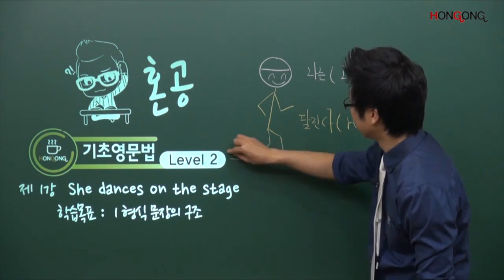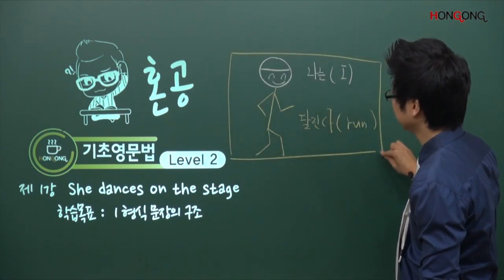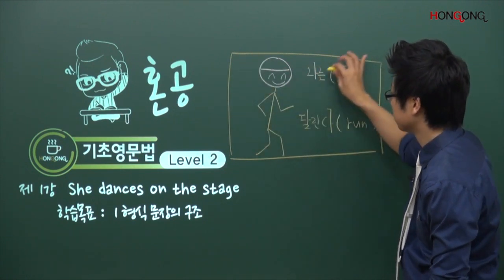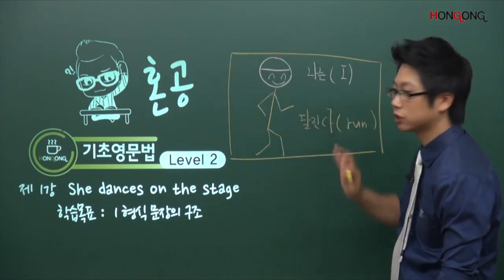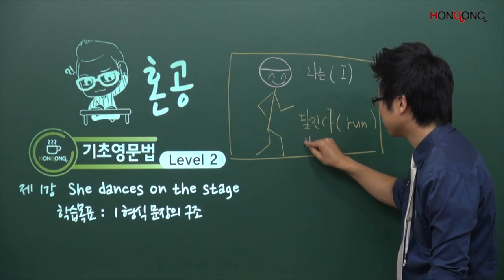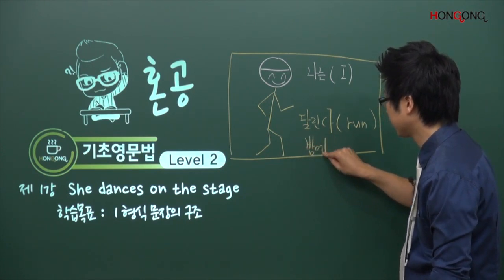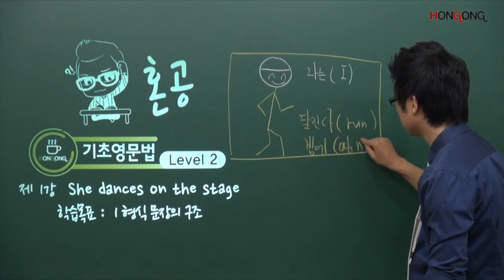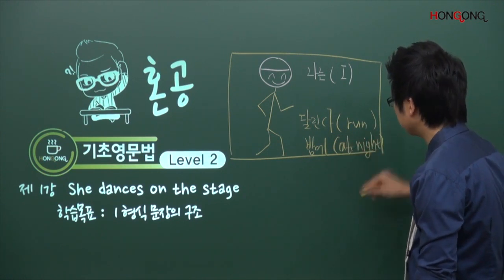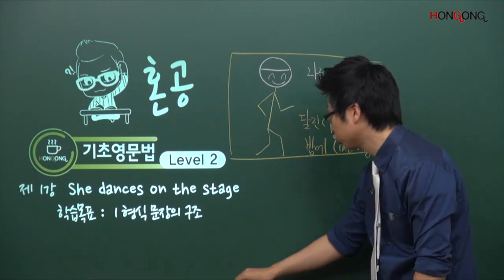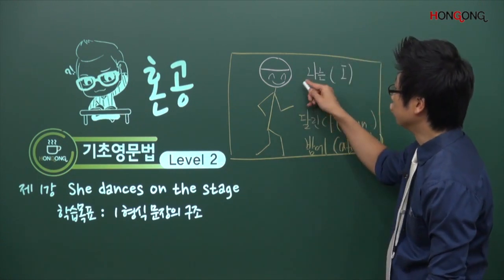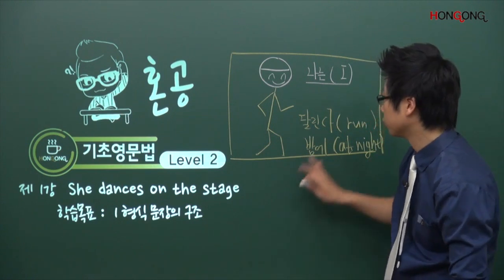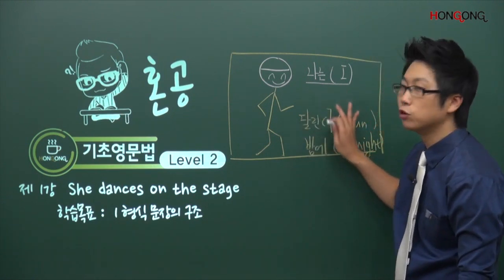그 다음에 맨 끝에 배경이 나오겠죠. 배경이 쭉 이렇게 등장합니다. 밤에 달린다고 할까요? 밤에라는 말이 끝에 나옵니다. 밤에는 영어로 at night. 이런 식으로 됩니다. 그래서 영어의 어순은 기본적으로 누구부터 출발하고, 그 다음에 몸뚱아리가 오고, 그 다음에 나머지로 구성이 돼 있습니다.